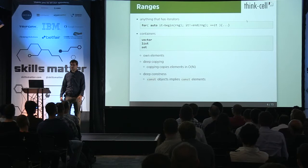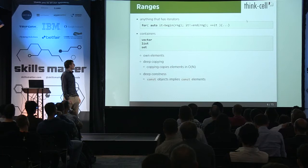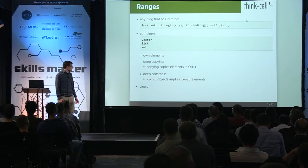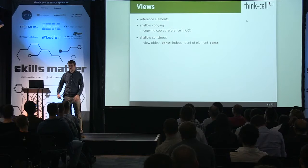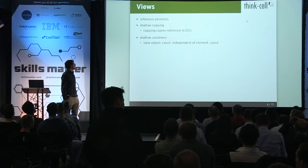But what else is there? Well, ranges added the concept of views. What's a view? It's kind of the opposite of the container — it references the elements, it doesn't own them. It has shallow copying, so you can just copy the view without copying any elements, and they will just point to the same elements as before. They have shallow constants, so when there is a constant view, this doesn't mean necessarily that you can't mutate the elements.